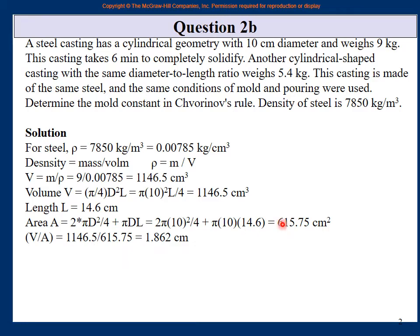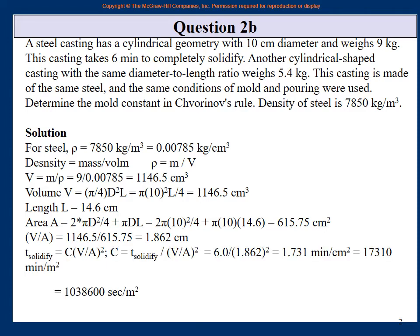Now compute V/A — volume divided by area — since Chvorinov's rule uses this ratio. V/A = 1.862 cm. The time to solidify is t = C × (V/A)², so rearranging gives C = t / (V/A)². Substituting the values gives us C.